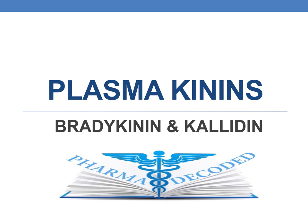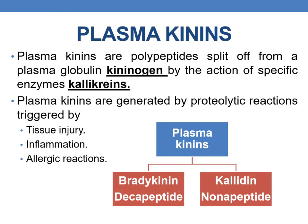Hello everyone. Now let us discuss about plasma kinins — bradykinin and calidin. Plasma kinins are polypeptides split off from a plasma globulin kininogen by the action of specific enzymes called callicrins. The plasma kinins are generated by proteolytic reactions and they are triggered by tissue injury, inflammation and allergic reactions. There are mainly two plasma kinins: bradykinin and calidin.